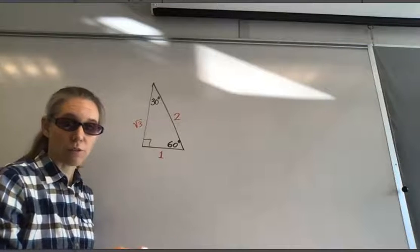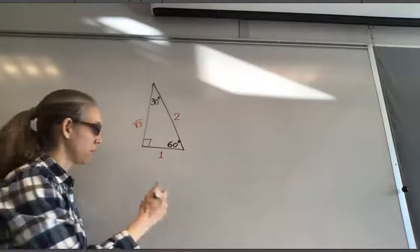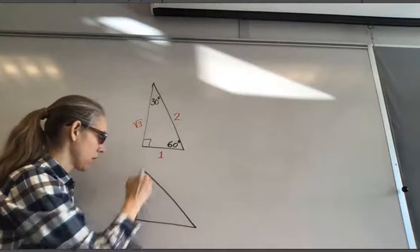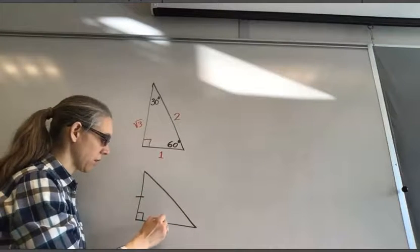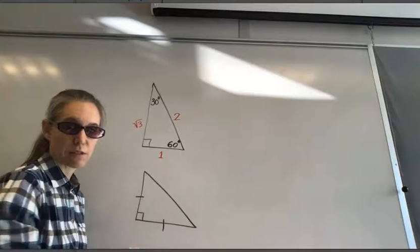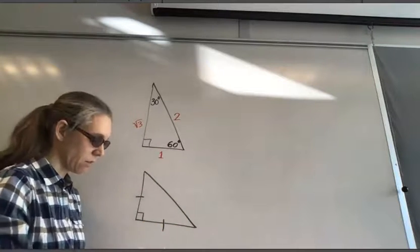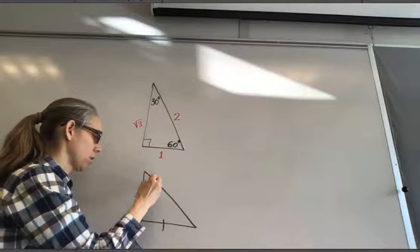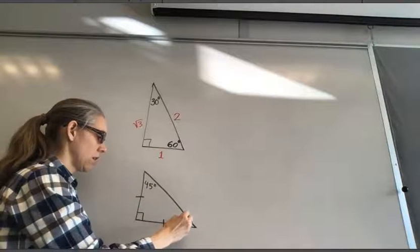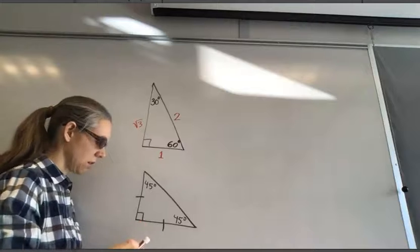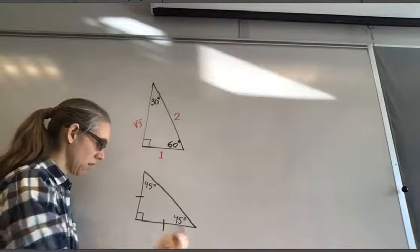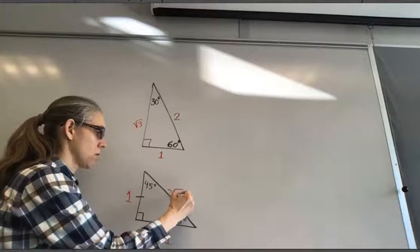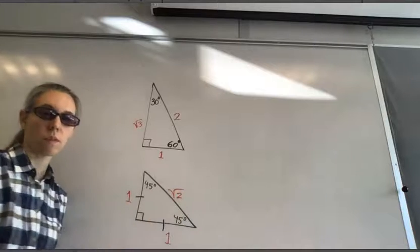Now let's look at the 45-45-90 triangle. It's the only type of isosceles right triangle, with angles of 45, 45, and 90 degrees. The side ratios are 1 to 1 to root 2. Now I'll put a problem from the book and we'll apply these ratios.